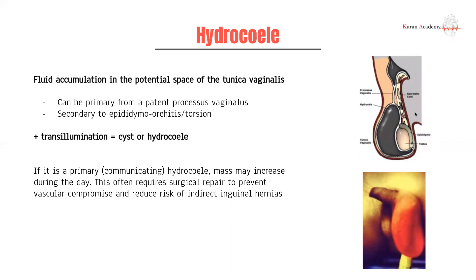If you have a hydrocele due to a patent processus vaginalis, it often presents more chronically and is worse after prolonged periods of standing — as you can imagine, it's based on gravity. If you have normal anatomy but fluid in the tunica vaginalis, it is most likely a reactive response to inflammation in the testes, secondary to things like epididymo-orchitis or torsion. So those are your two types: communicating versus non-communicating.